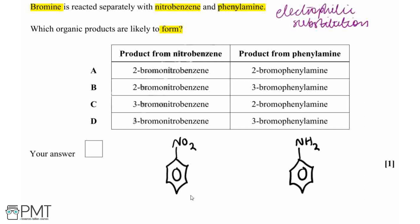For our nitrobenzene, the nitro group is going to be a 3-directing group. This is because it withdraws electrons from the ring, therefore deactivating it. So we're going to get substitution occurring at position number three, which is here or could also be on the other side as well.